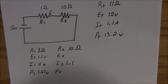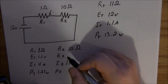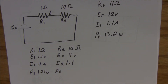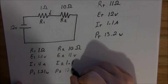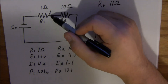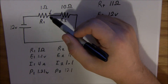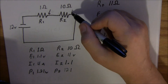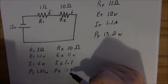Now let's do the same thing for R2. E is I times R, so 1.1 times 10 — it is 11 volts. And then we need to find power, which is I times E: 1.1 times 11, which is 12.1 watts. So right here after R1 we have 1.1 volts, 1.1 amps, and the power being drawn is 1.21 watts. And if you measure it right here after R2, it would be 11 volts at 1.1 amps, 12.1 watts.